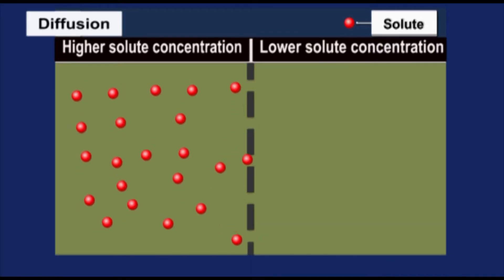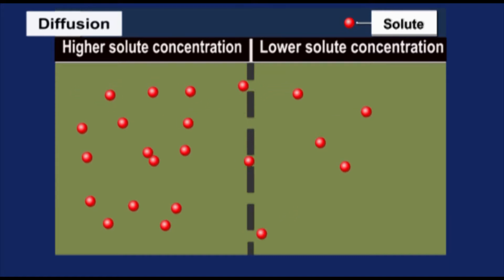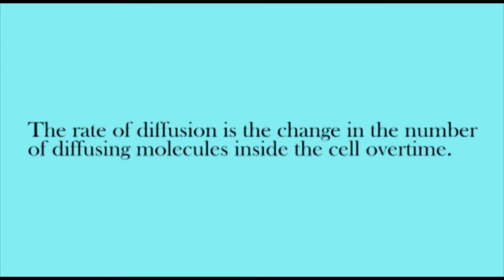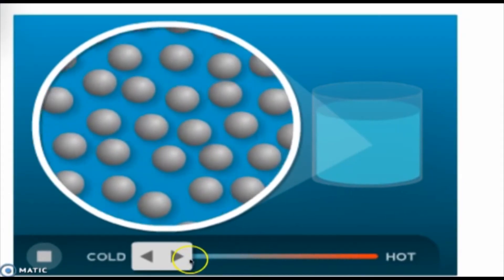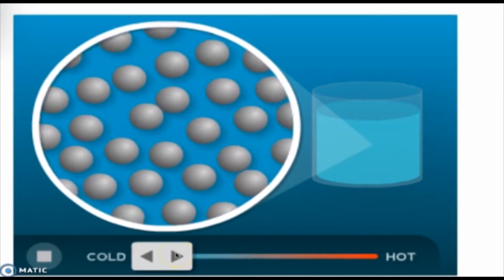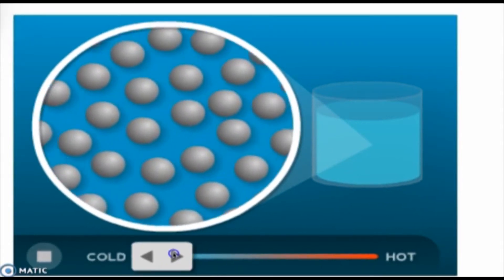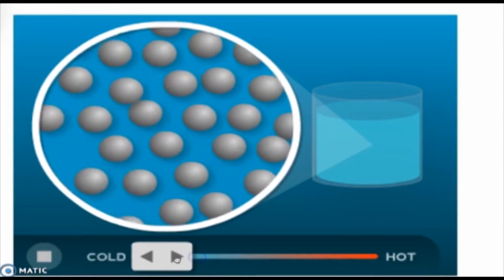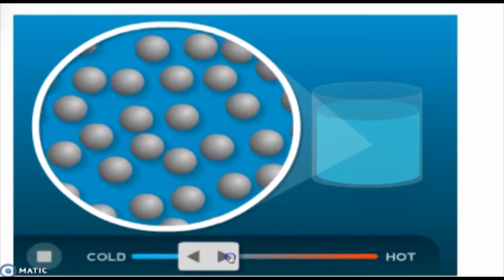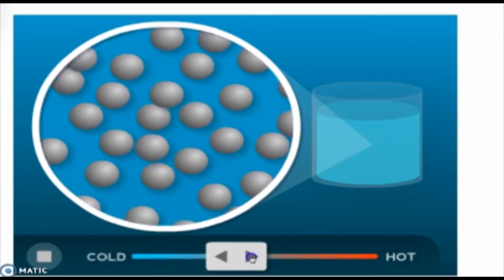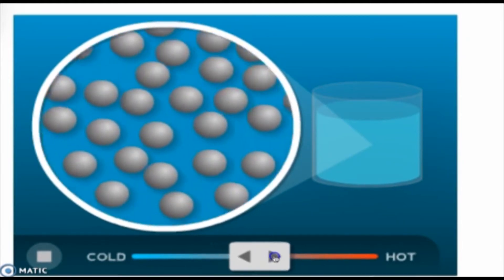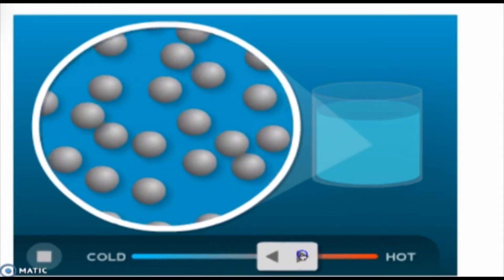The rate of diffusion can be affected by different factors. The rate of diffusion is the change in the number of diffusing molecules inside the cell over time. One of the factors that affect the rate of diffusion is temperature. Molecules move or diffuse more rapidly at high temperature than at low temperature, because higher temperature increases the energy of the molecules. As the energy increases, the movement of molecules increases.